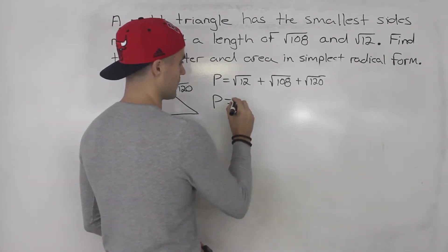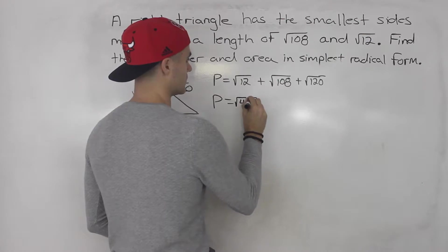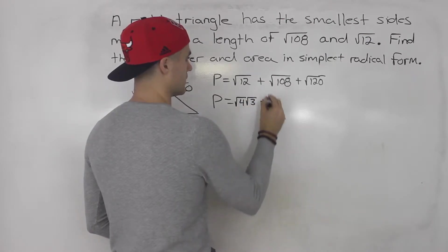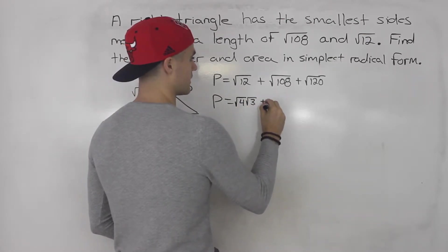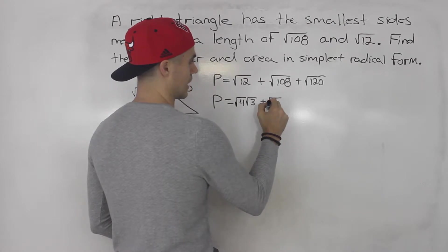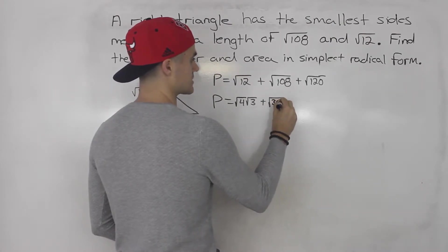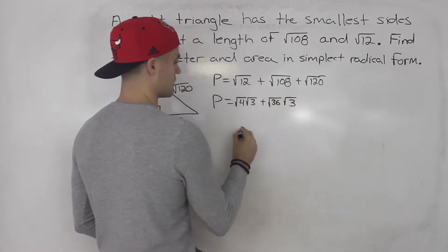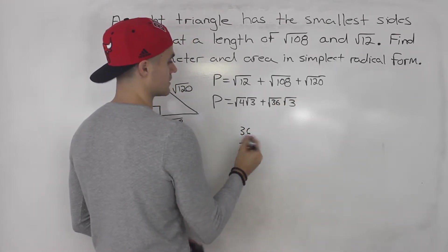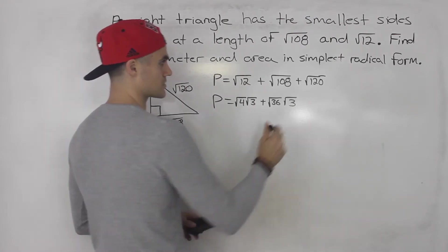So this root 12, we could break down into root 4 times root 3. This root 108, we could break down into, I think 36 and 3. 36 times 3 gives us 108. So that works.